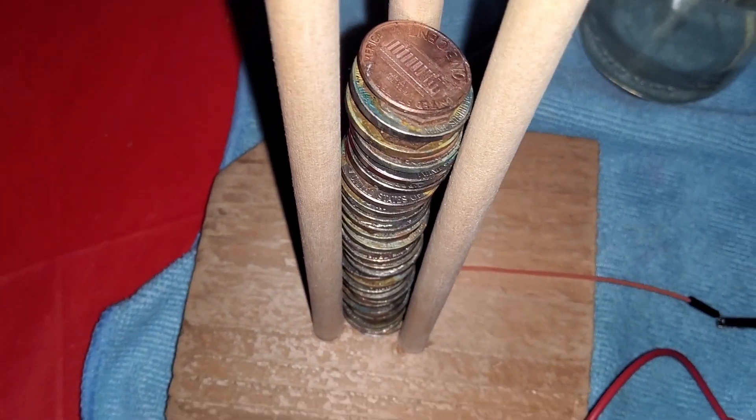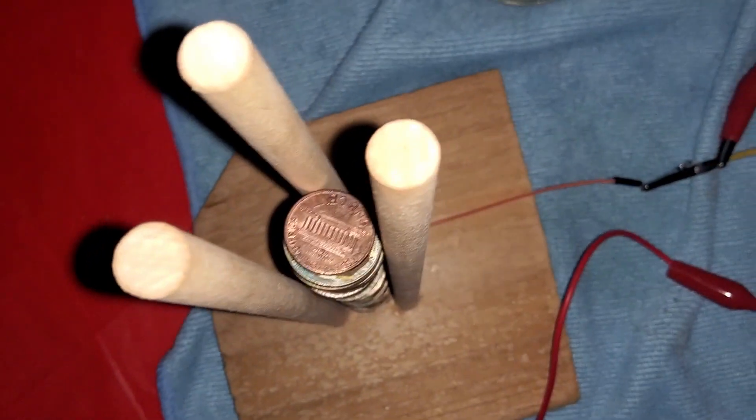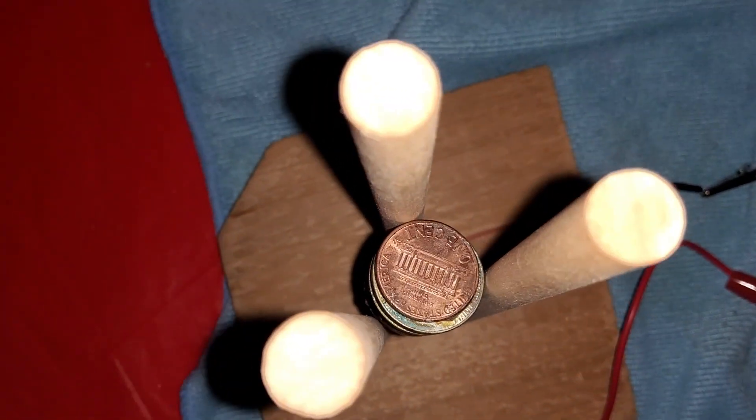This design of battery came from the first battery ever invented back in 1800, and it is called the Voltaic Pile.